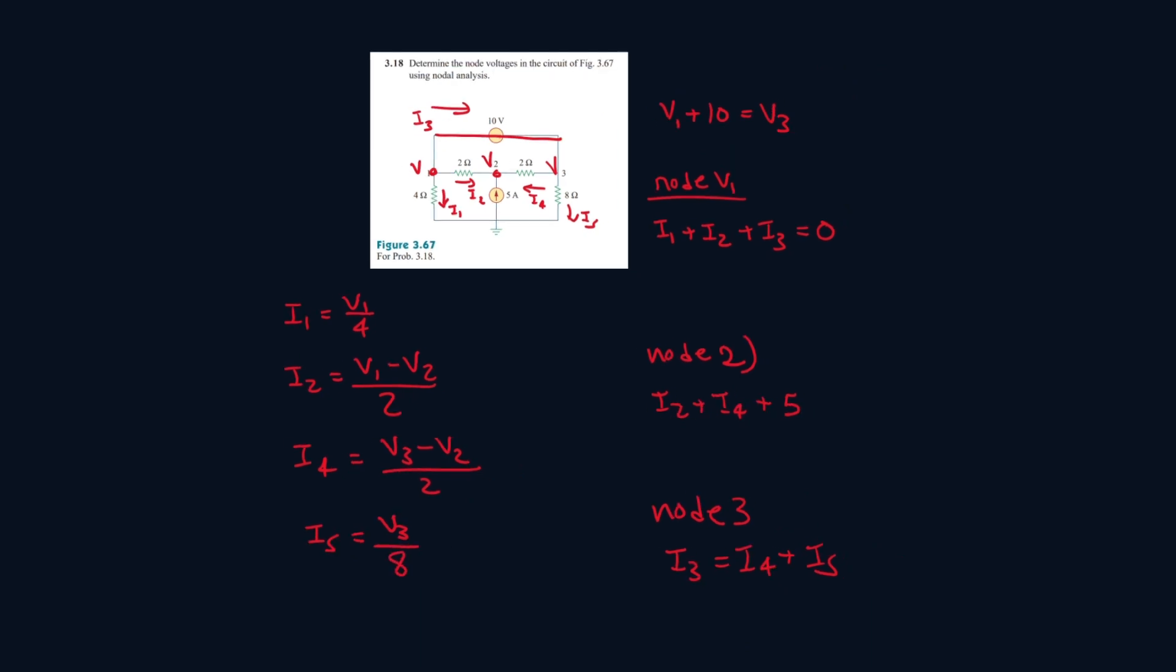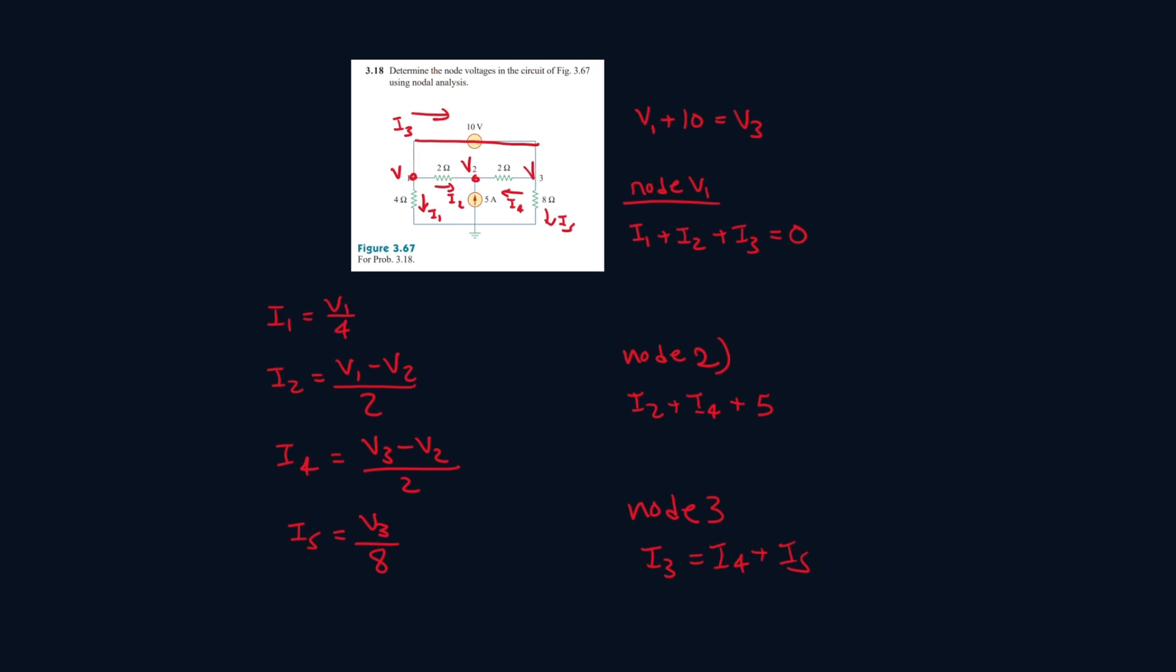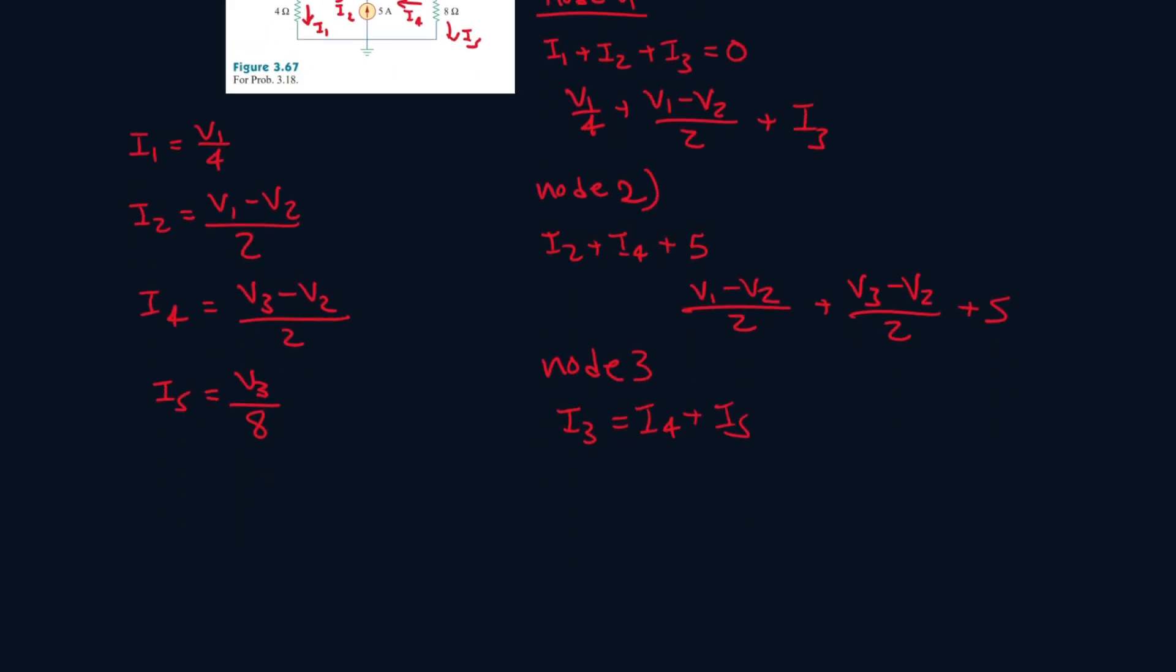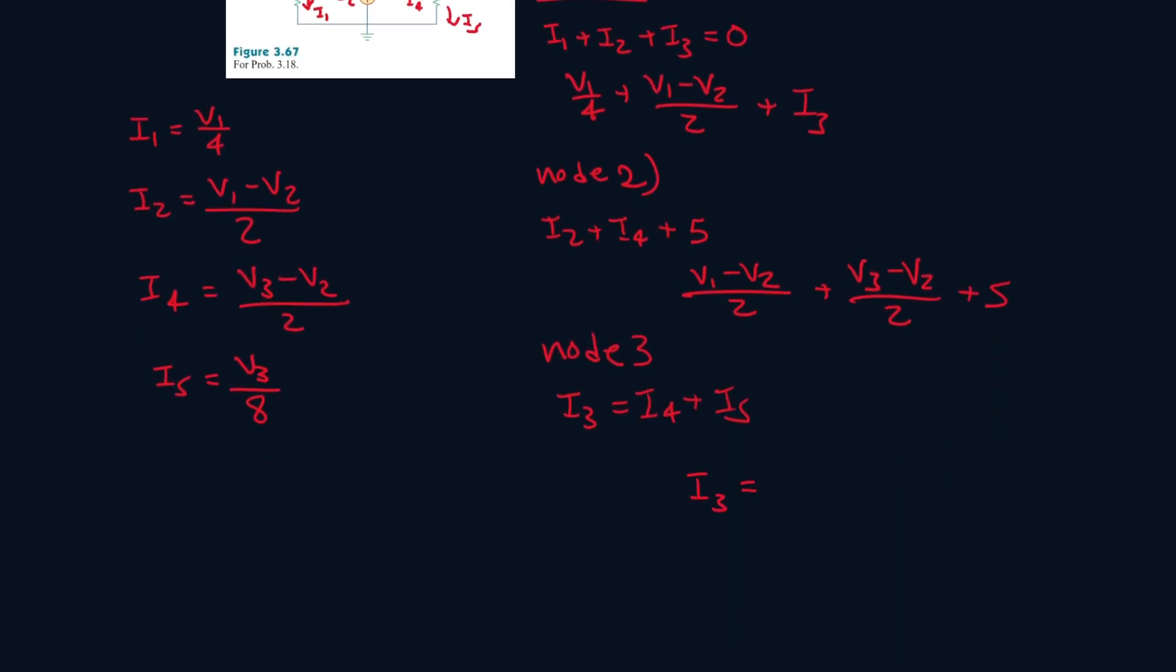Now let's plug everything in except we can't plug for I3, but that's fine. This one will be V1 over 4 plus V1 minus V2 all over 2 plus I3. This one will be V1 minus V2 all over 2 plus V3 minus V2 all over 2 plus 5. And this one will be I3 is equal to V3 minus V2 all over 2 plus V3 over 8.